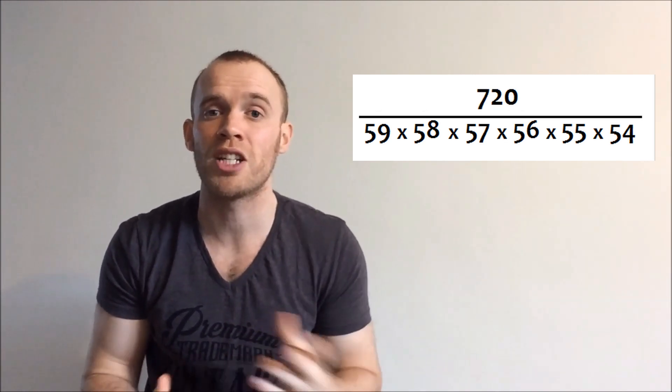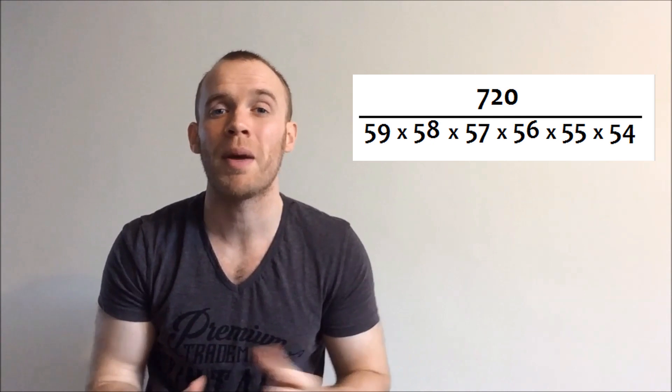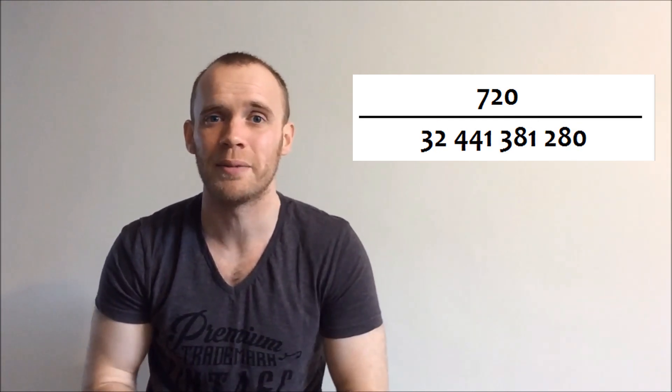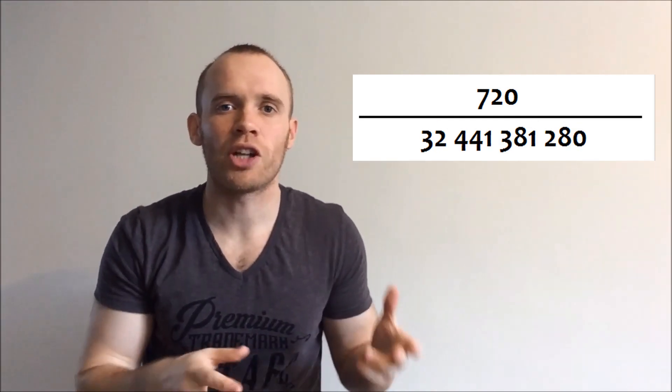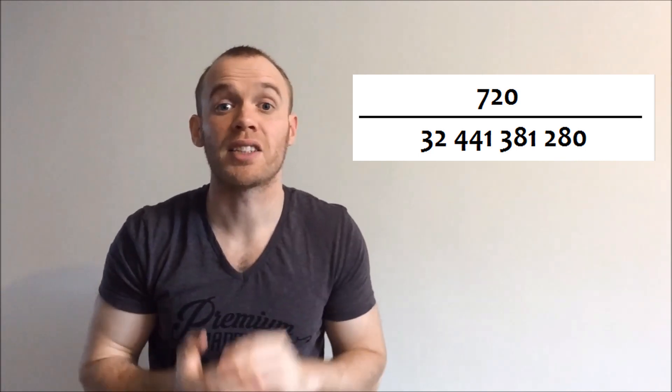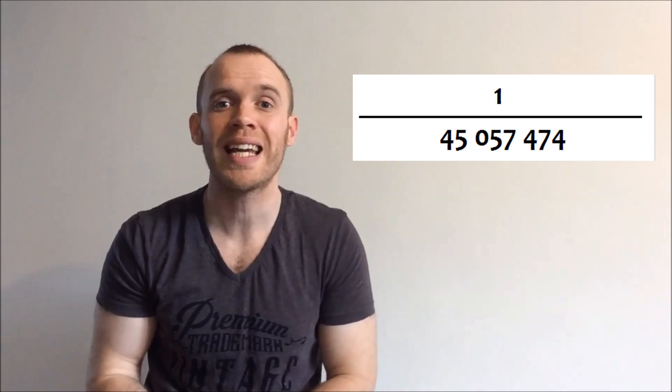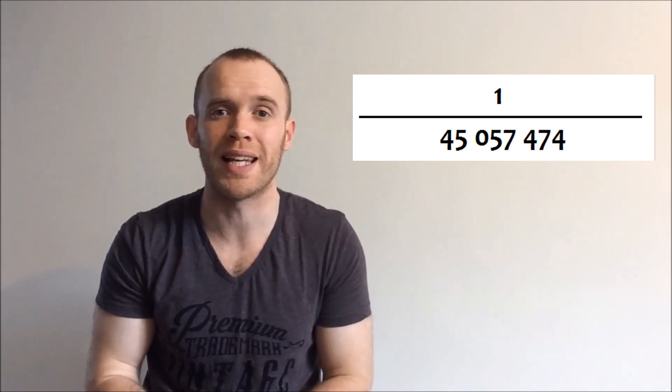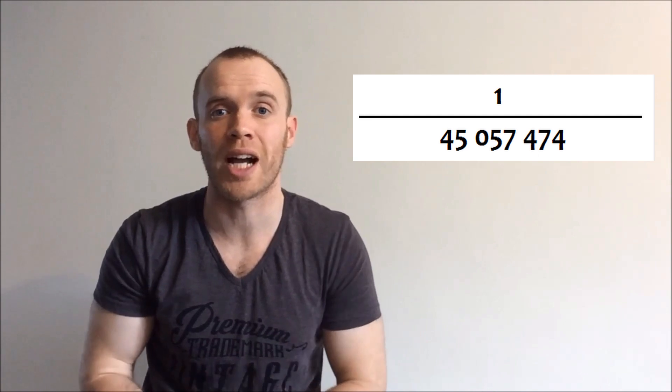And then at the bottom, the denominators, multiply them up, you get a very large number, 32,000 million. The format we like to hear it in is odds of one in something. So you need to divide the top number and the bottom number by 720, and that gets you roughly one in 45 million. And that's your chance of winning the jackpot.